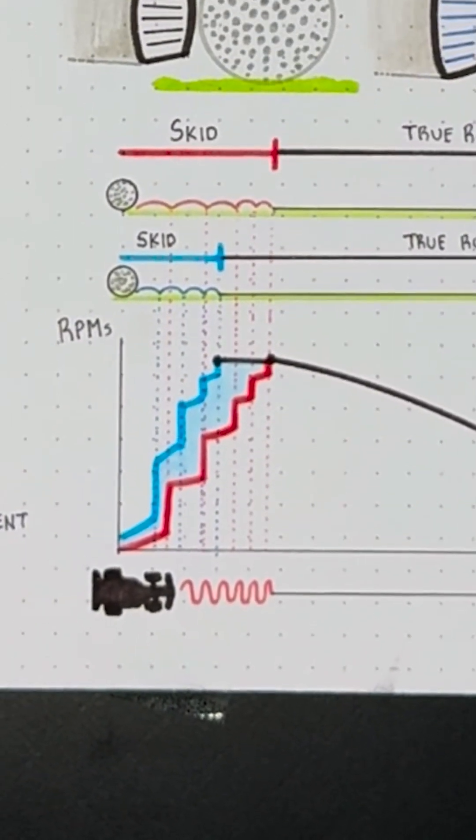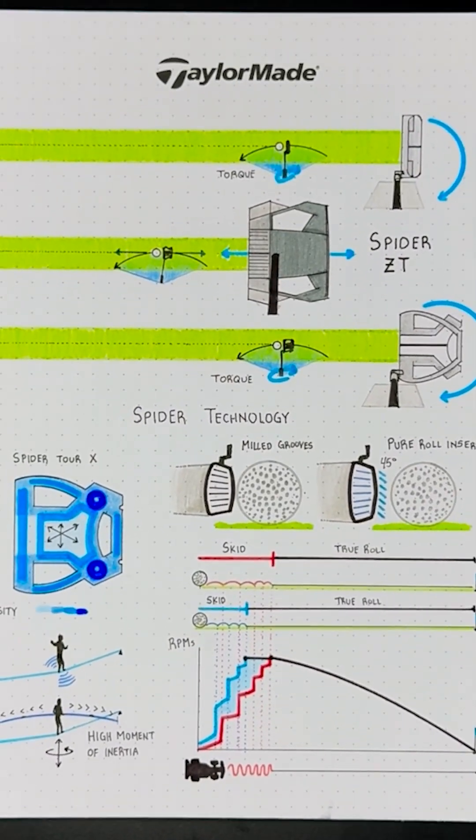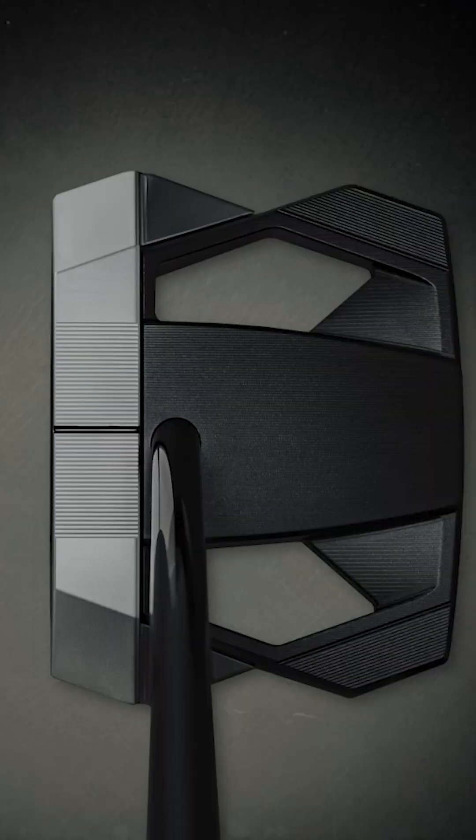With this new ZT putter, proven spider performance and pure roll consistency meets zero torque stability, something that we encourage all golfers to experience.